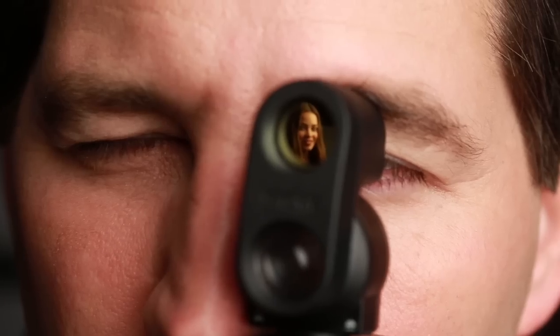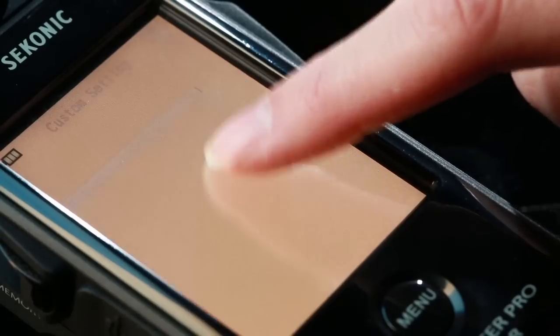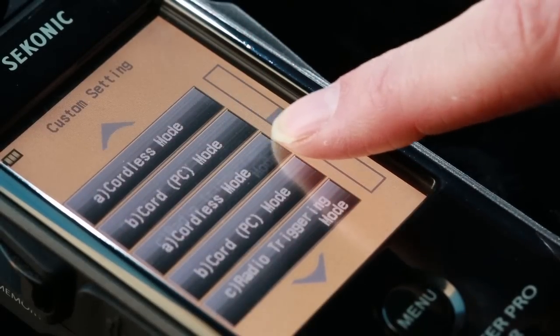Additional features such as retractable lumisphere, separate 5-degree spot attachment, and up to 13 custom functions make this meter easy to set up to your personal preferences.